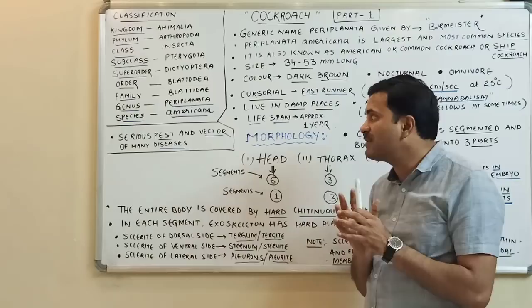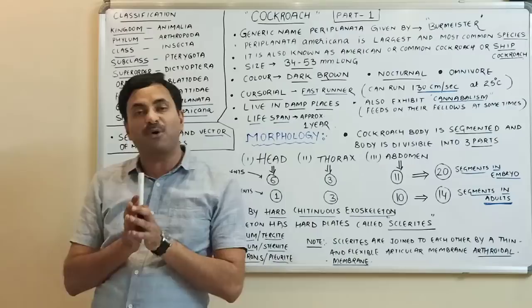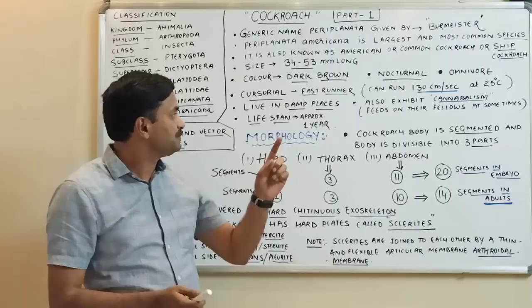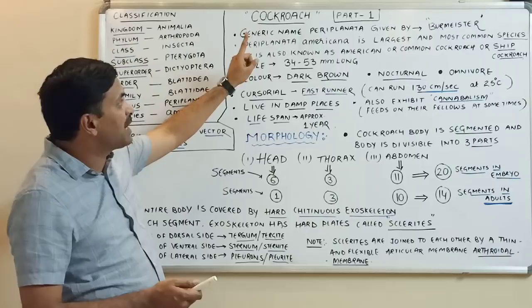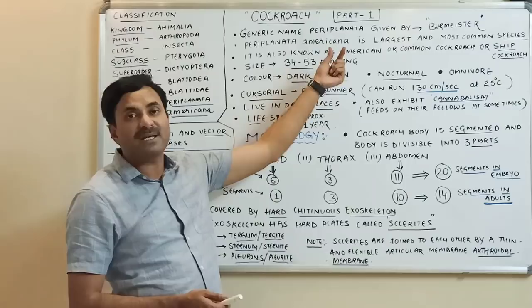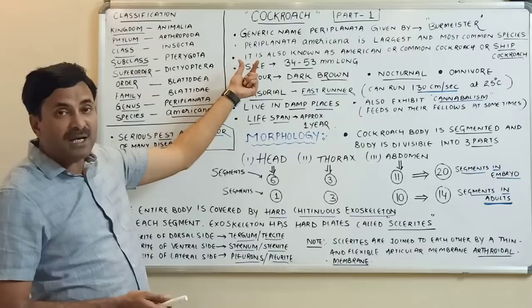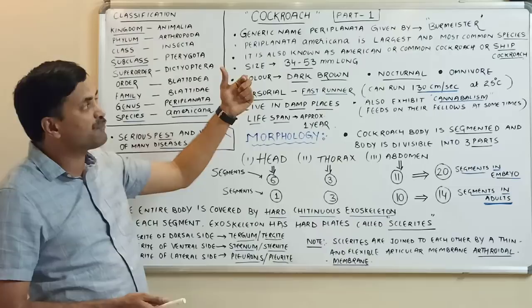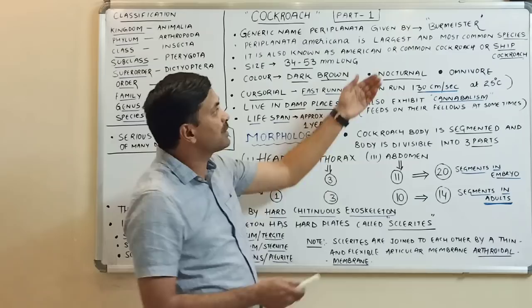The genus is Periplaneta and the species is americana. We will be focusing on Periplaneta americana. Though there are other species of cockroach, the most common cockroach found all over the world is Periplaneta americana. The generic name Periplaneta was given by a scientist named Burmeister. It is the largest and most common species, also called the American cockroach, common cockroach, or ship cockroach.